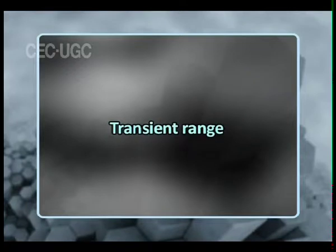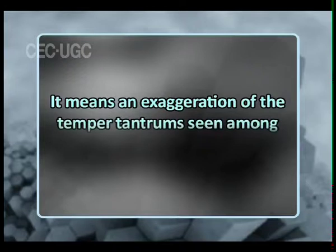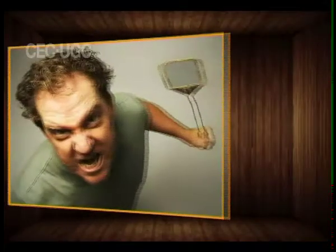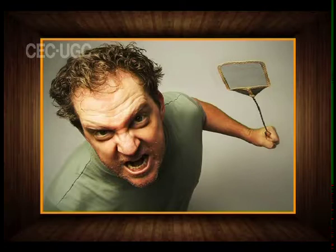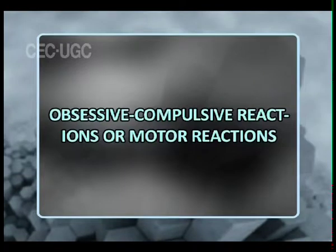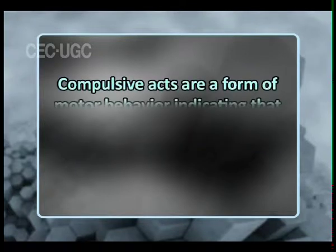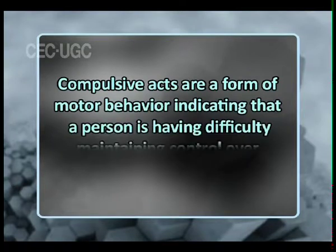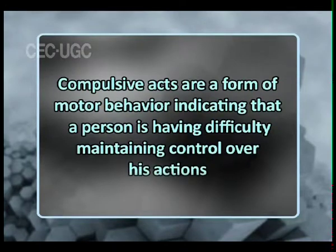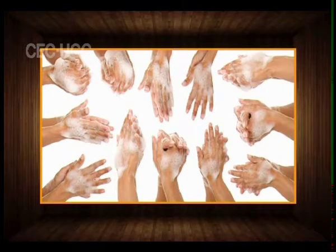Then transient rage: it means an exaggeration of the temper tantrum seen among children. This uncontrollable temper reaction in adults results in strong emotional upheaval that can lead to destructive actions. Number four, obsessive-compulsive reactions or motor reactions: compulsive acts are a form of motor behavior indicating that a person is having difficulty maintaining control over his actions. Compulsions are irresistible impulses to perform certain acts that in some way relieve anxiety. Often they are associated with obsessions, hence the term obsessive-compulsive reactions.